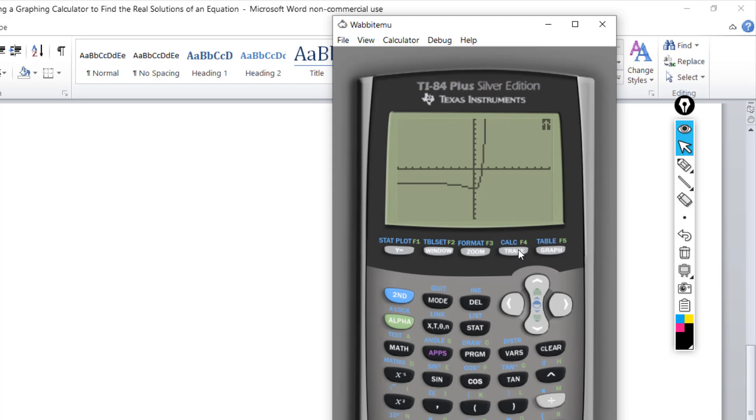Go second. Trace to access the calculate menu. Again, enter. Hit number 2. And then for the left bound, go up a little bit. Get it closer to that point. Hit enter. Right bound now. Go past it. Hit enter. Once again, ignore it. Hit enter.